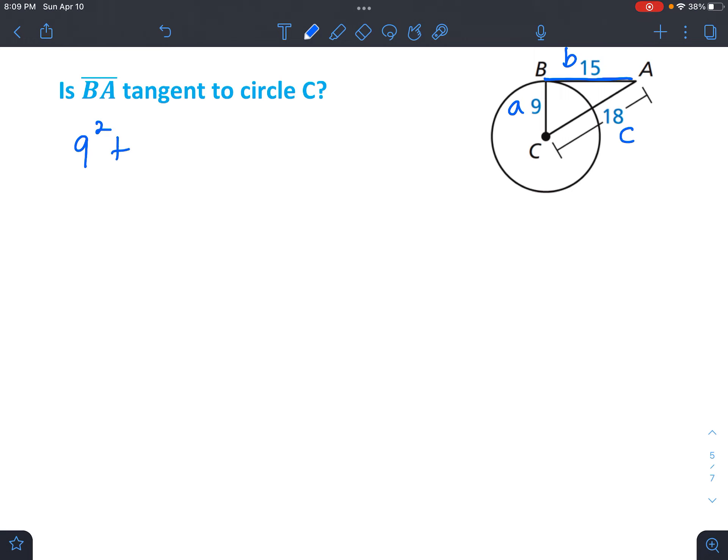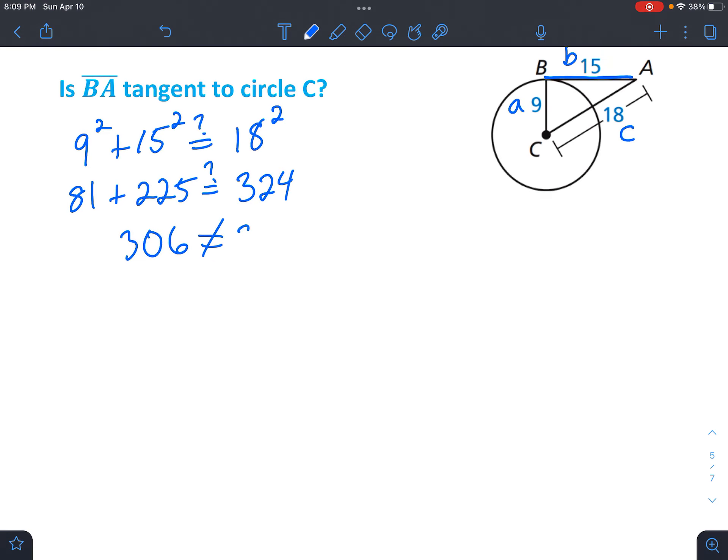So we've got 9 squared plus 15 squared. We want to know, does that equal 18 squared? Go ahead and use your calculator to square everything. So we get 81 plus 225. We're wondering, is it equal to 18 squared, which is 324? All right, 81 plus 225 is 306.